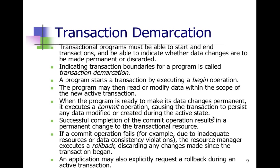The database tier is usually referred to as the persistence tier because that data is going to stay the same after the transaction — it's not going to be corrupted. If a commit operation fails, due to inadequate resources, data inconsistency violations, or security checks, the resource manager executes a rollback, discarding any changes made since the transaction began. An application may also explicitly request a rollback during an active transaction if it can't complete.